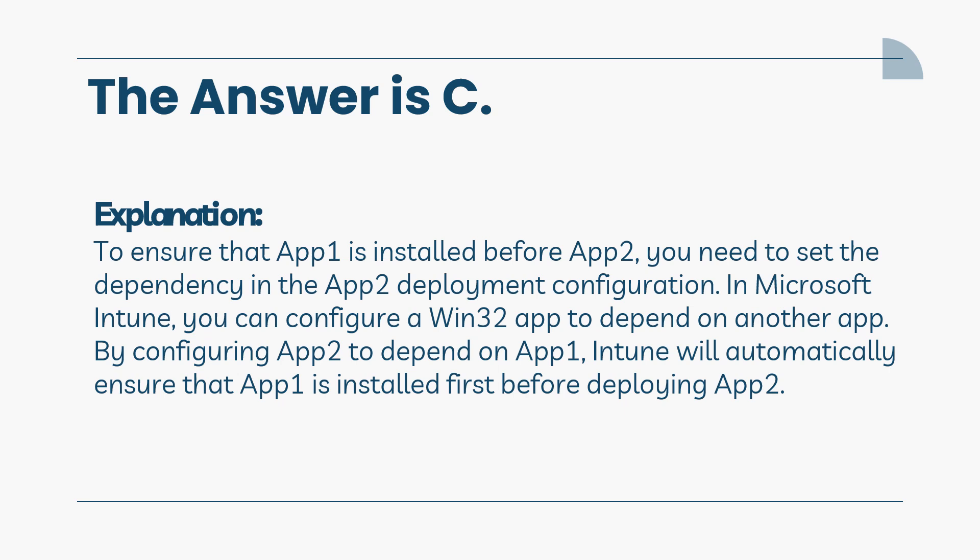To ensure that App1 is installed before App2, you need to set the dependency in the App2 deployment configuration. In Microsoft Intune, you can configure a Win32 app to depend on another app. By configuring App2 to depend on App1, Intune will automatically ensure that App1 is installed first before deploying App2.